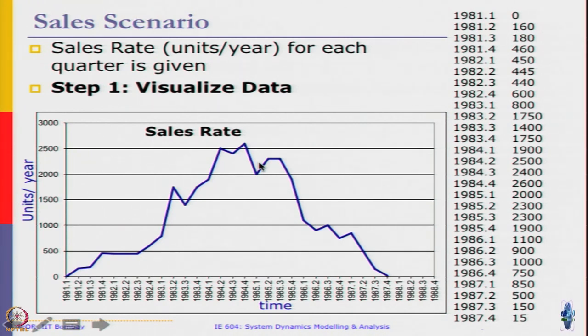The data here shows a kind of bell-shaped pattern. It increases, peaks at around 1984 third quarter, and then it rapidly falls down to kind of zero at 1987 fourth quarter. That is the data that has been provided to us. Now, we would like to see how we can simulate this kind of behavior using the diffusion models that we have learned.